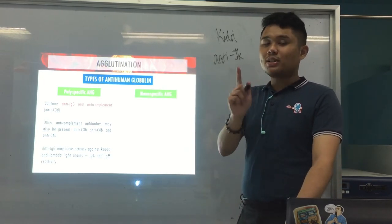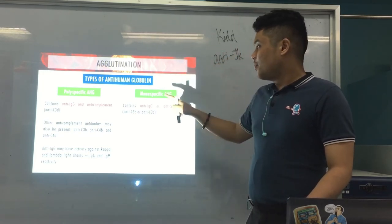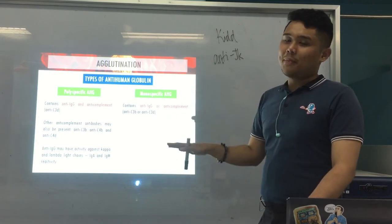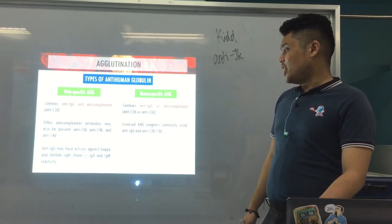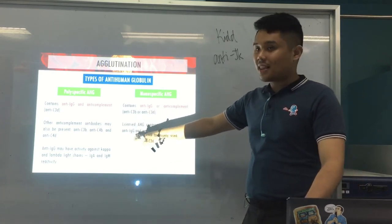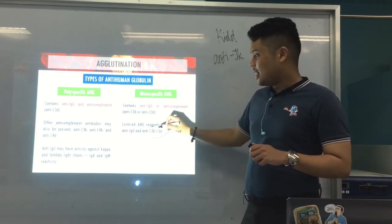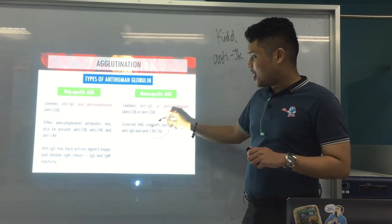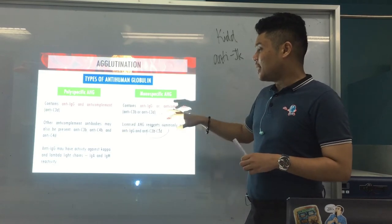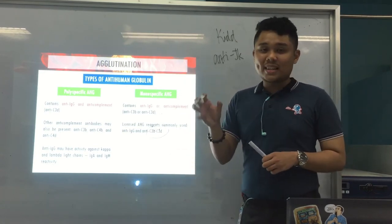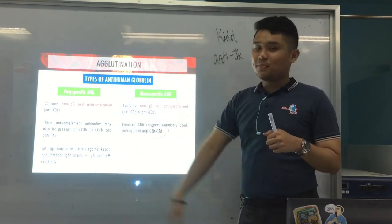We also have mono-specific — by the name, mono means one. So it either contains anti-IgG or anti-complement — not both. Licensed AHG are either anti-IgG or anti-C3b/C3d. One reagent can already detect two complement components: C3b or C3d — two birds with one stone. But mono-specific only detects either antibody IgG or complement, not both like poly-specific.